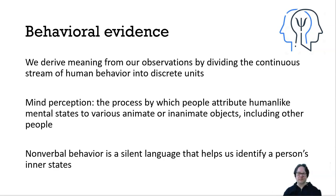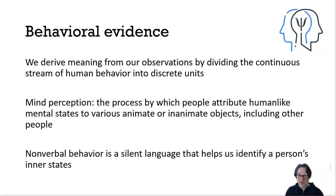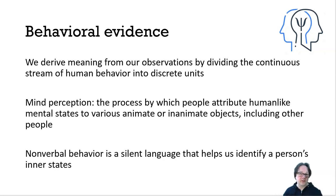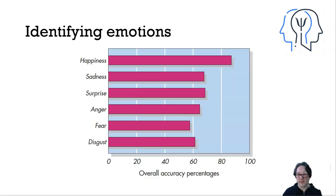It's not always easy to determine someone's mental state, particularly if we're just relying on what somebody is saying, because verbal behavior can be manipulated — I can tell you I'm sad when I'm not, or angry when I'm not. Usually it's people telling you they're not angry when they clearly are. Non-verbal behavior is what we're paying attention to, and it's usually that non-verbal behavior that lets us infer something about their mental state — it's a silent language that helps us identify a person's inner state.